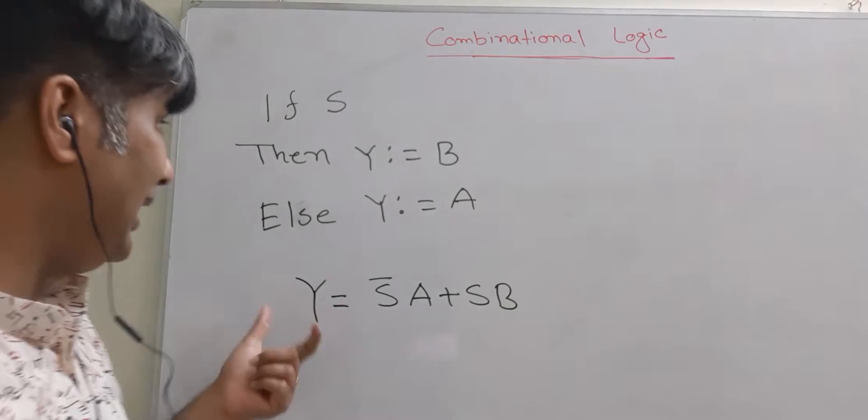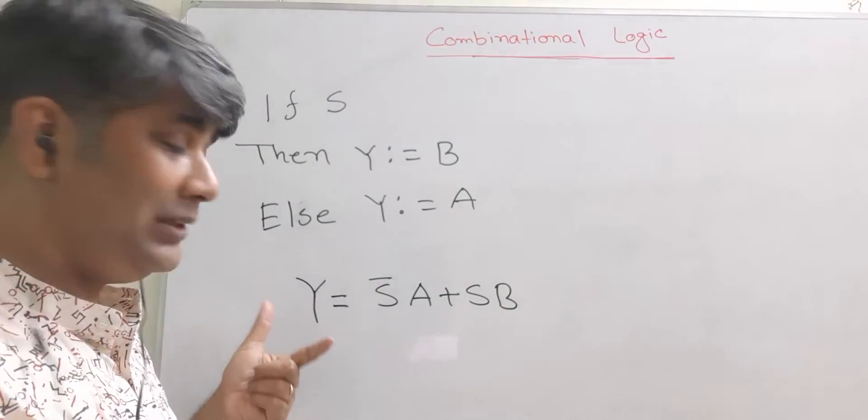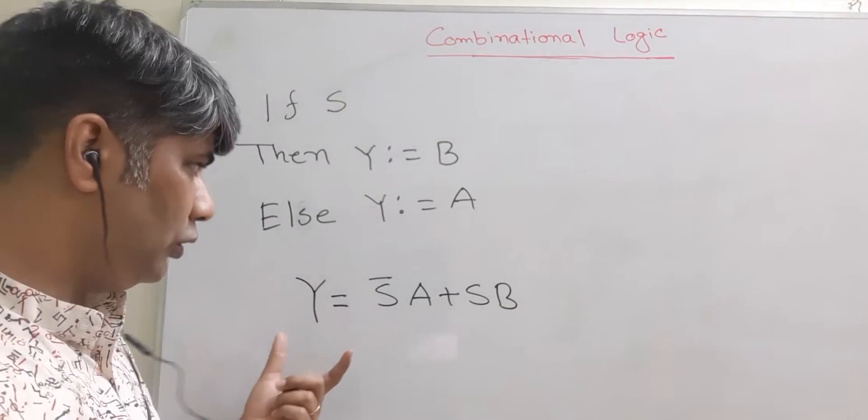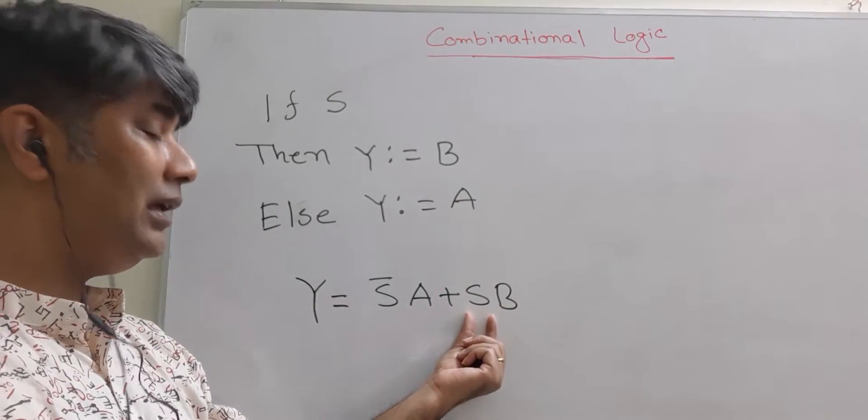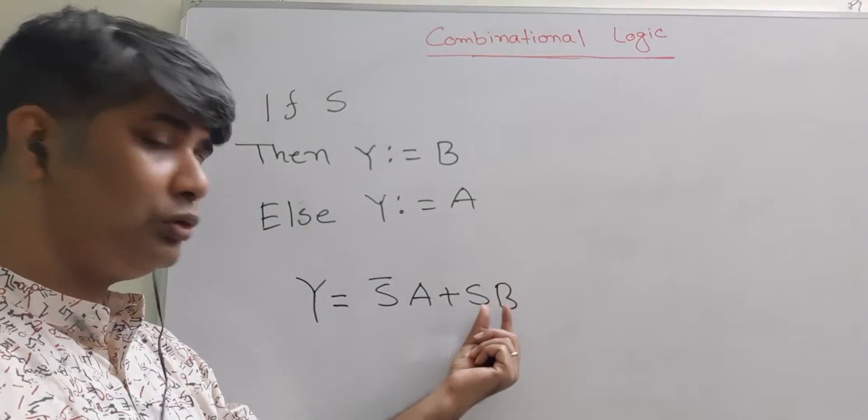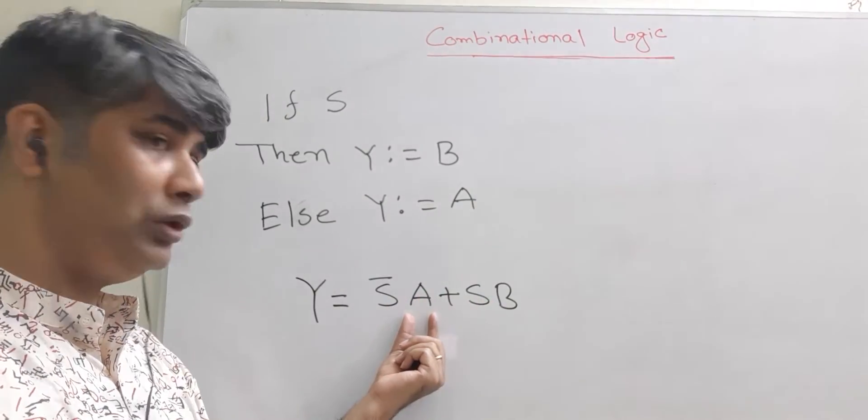Again, when S is false, that means S is zero, this one becomes one and this S is zero. So this term altogether becomes zero. So the output will be A.